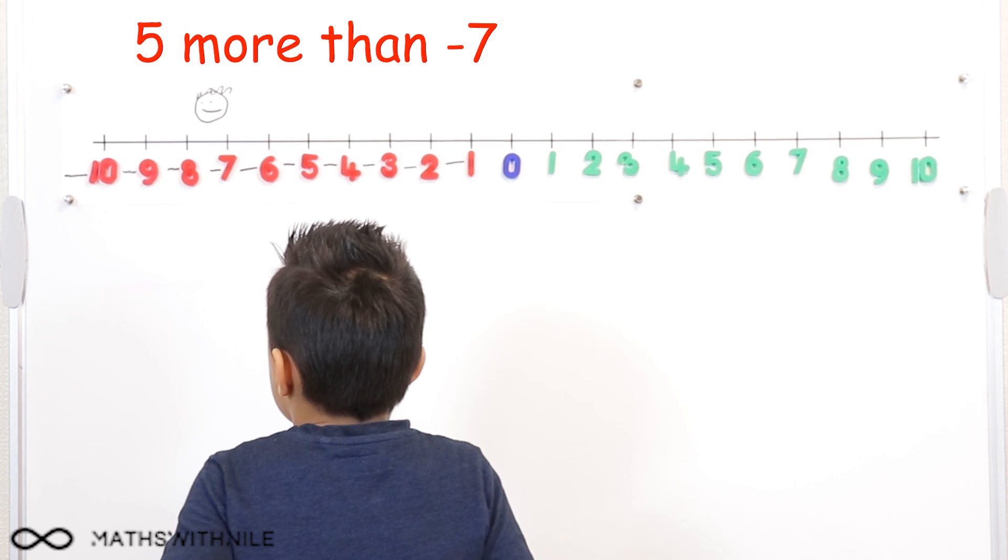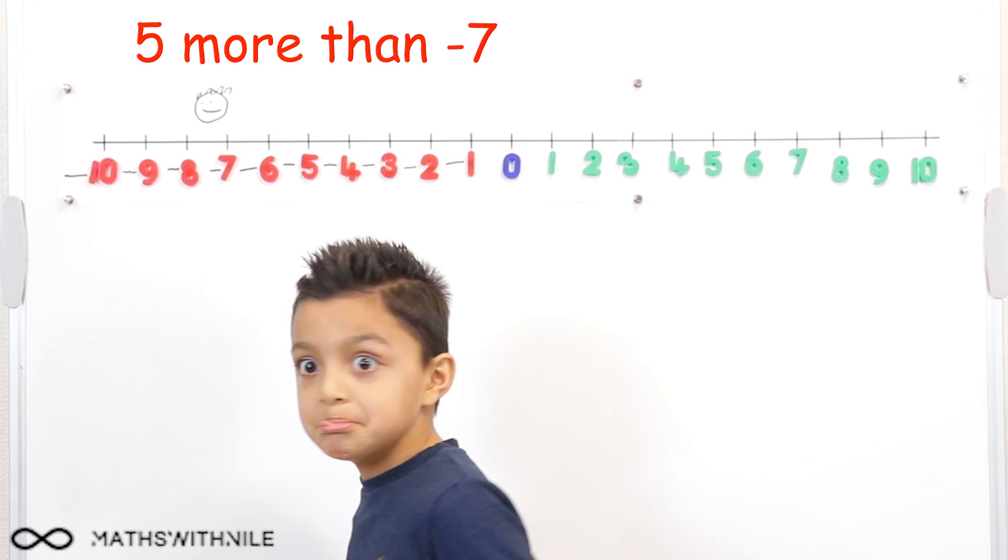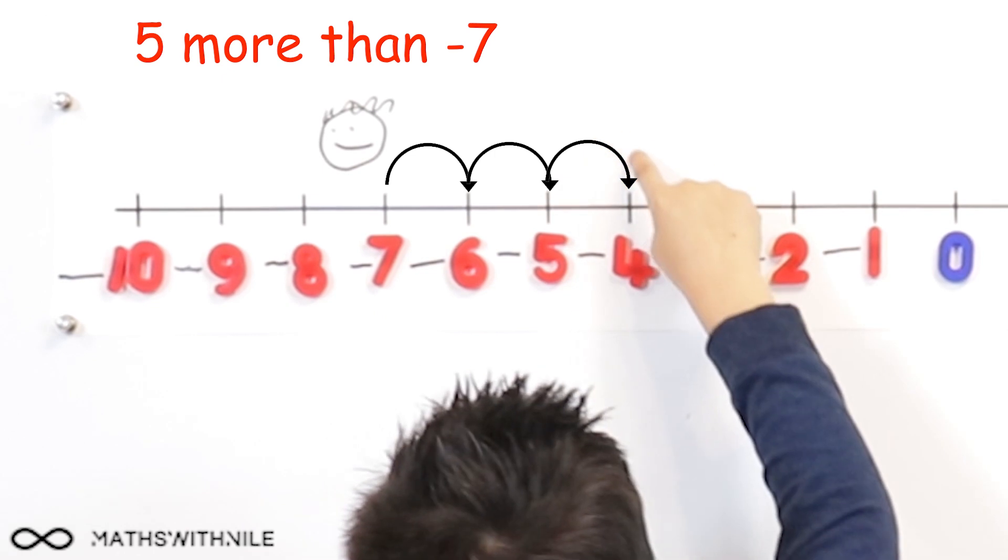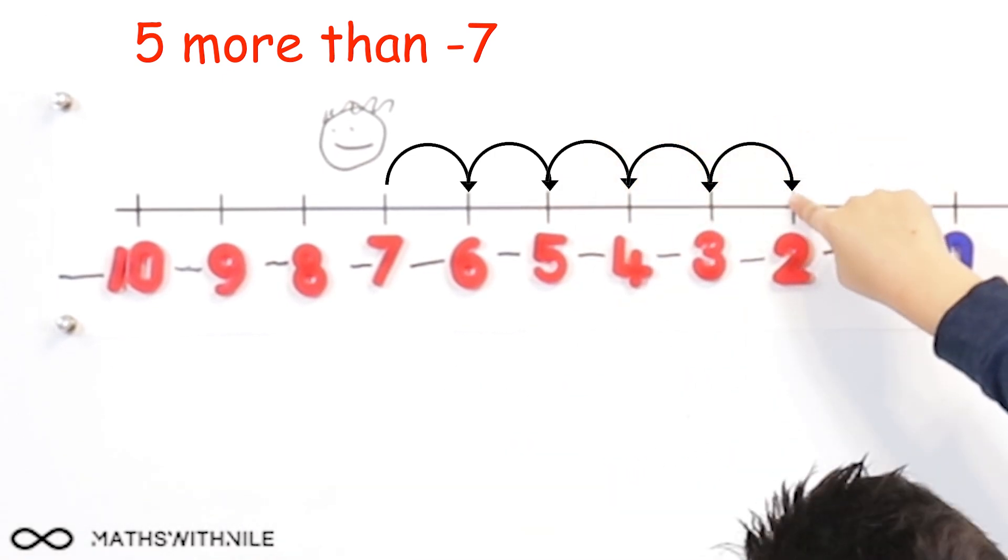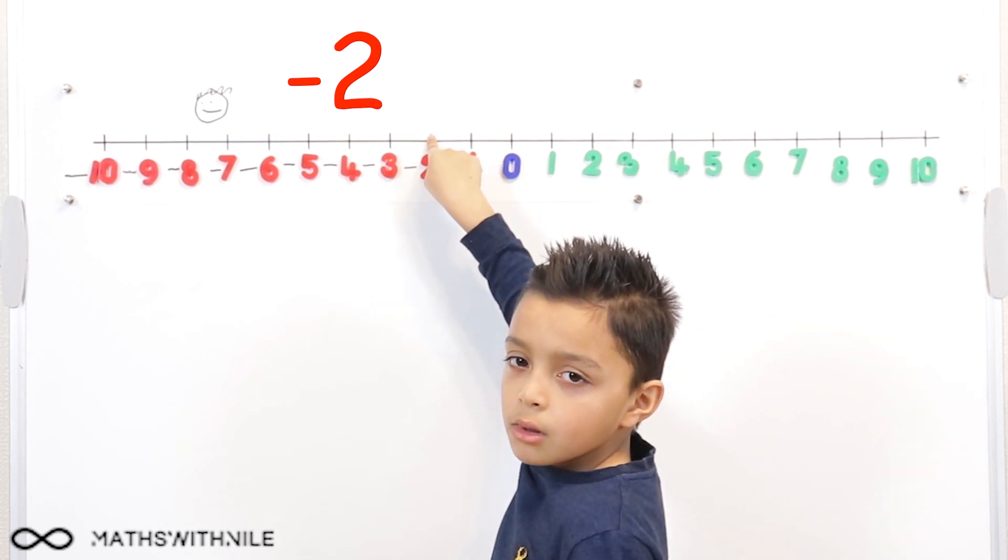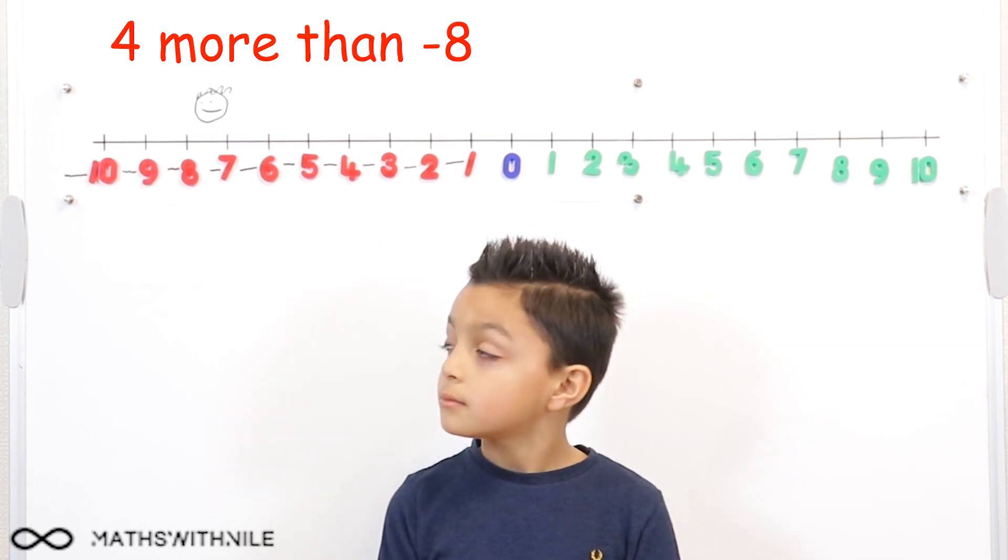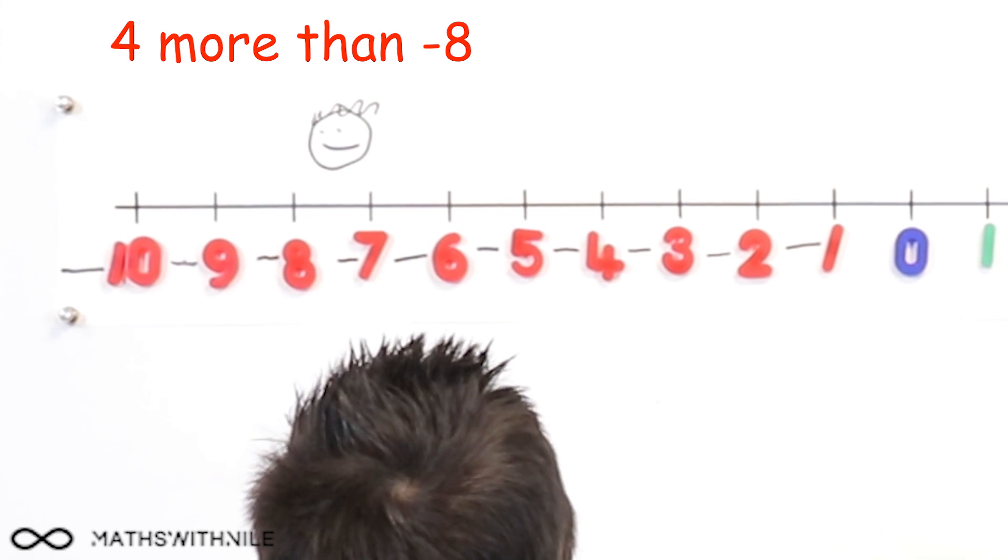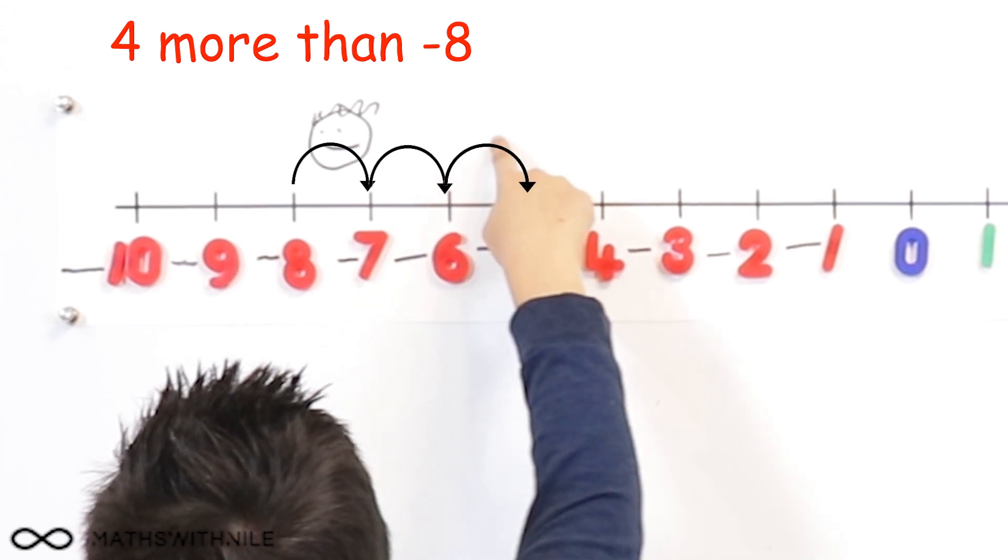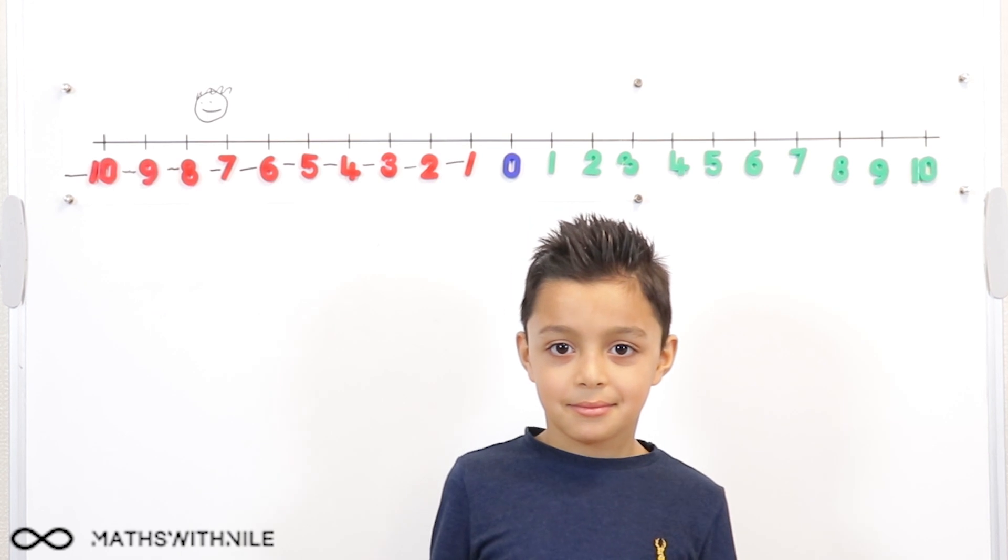What number is 5 more than minus 7? More than minus 7. 1, 2, 3, 4, 5, minus 2. Right. Remember, when we're doing more than, we need to go to the right. What is 4 more than minus 8? 4 more than minus 8. 1, 2, 3, 4, minus 4.